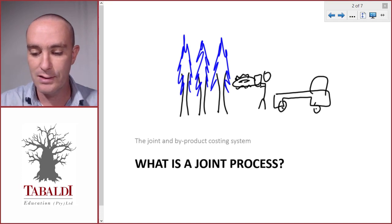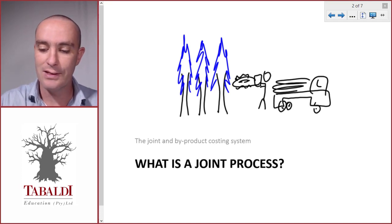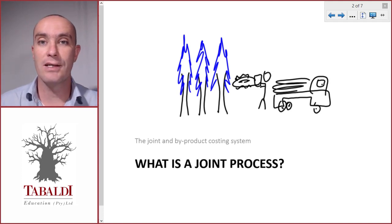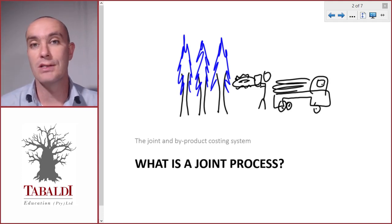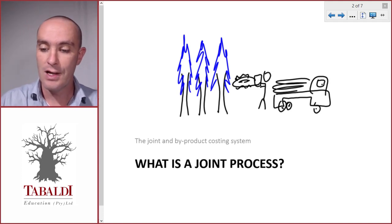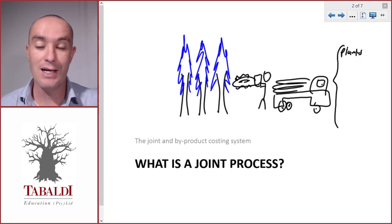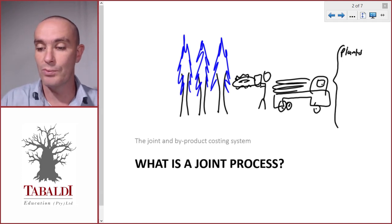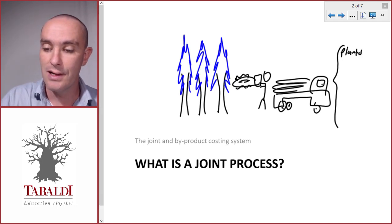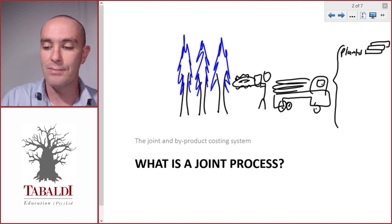The timber has to be transported on the back of a truck to the factory where it will be processed further. The products that come from this process include wooden planks — the nicer pieces of wood are cut into planks used for making furniture and building houses.